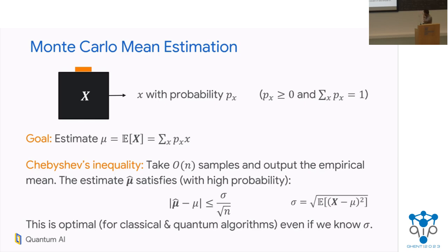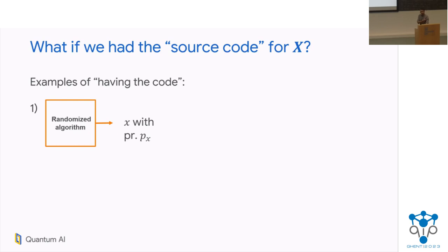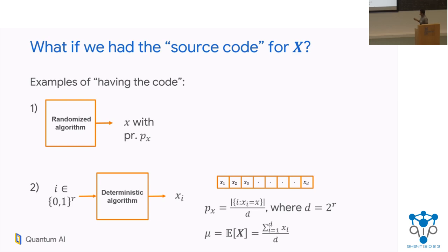So we have to change the question a little bit. Instead of this being a black box, what if you had the source code for this random variable — what if the random variable was produced by some algorithm? One very reasonable example is a randomized algorithm that as output gives you X with probability P sub X. This is a standard fact: if you have a randomized algorithm, you can always pull the randomness out. You can view it as a deterministic algorithm that accepts some seed randomness. The algorithm takes r random bits, the randomness is called i, and outputs some X which is a function of i — call it X_i. The probability of a given X is the number of times X_i appears in the output divided by the total number of different random seeds, which I'll call d. So this deterministic algorithm encodes d real numbers X_1 through X_d, and the mean simplifies to just the average of these d numbers.